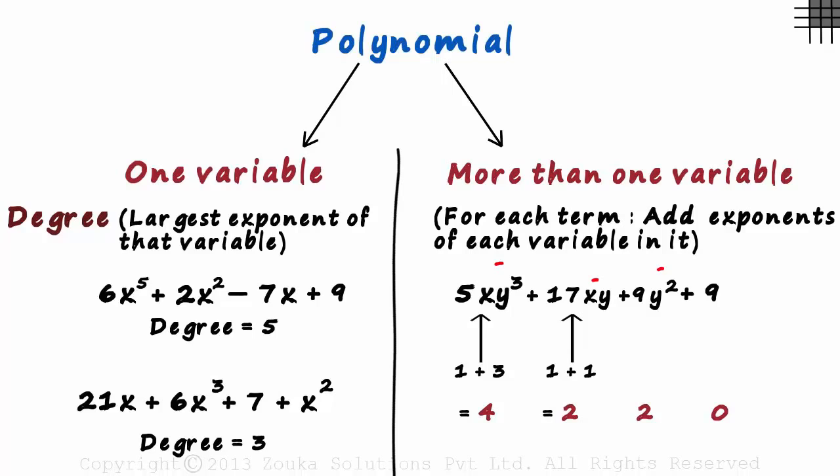Remember, we are looking at exponents of variables. The exponent of variables of the last term is 0. And the largest of these becomes the degree. The degree of this polynomial is 4 which is the highest amongst these.